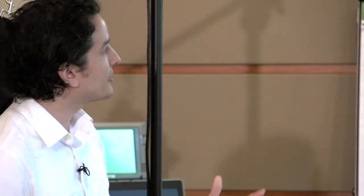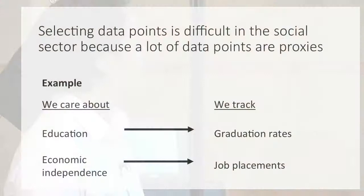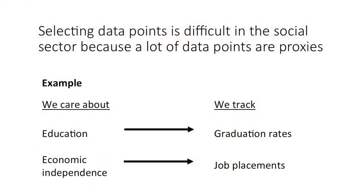Selecting data points is difficult in the social sector because a lot of data points are proxies. When I'm talking about data points in this talk, I'm specifically talking about social outcomes metrics or outcomes data. For example, maybe we care about education but then we track graduation rates. Graduation rates isn't exactly education — we use it as a proxy for whether someone is educated or not.